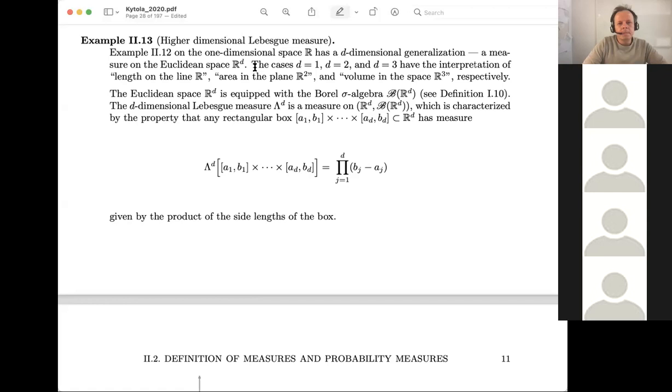We can also define a Lebesgue measure, the so-called d-dimensional Lebesgue measure, and that's called the Lambda_d. So it's a measure on the d-dimensional Euclidean space, and then the Borel sets of the d-dimensional Euclidean space. So again, now the d-dimensional Euclidean space, we can... we know what the open sets are there.